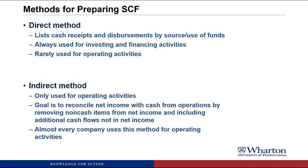Instead, for operating activities, companies tend to use the indirect method. This can only be used for operating activities, and the goal is to reconcile net income with cash from operations by removing any non-cash items from net income and including any additional cash flows that were not in net income. So we're going to see a statement that starts with net income, ends with cash from operations, and shows all the differences between the two. Almost every company uses this method for their operating activities. And in fact, if you use the direct method, companies also have to provide the indirect method as well.